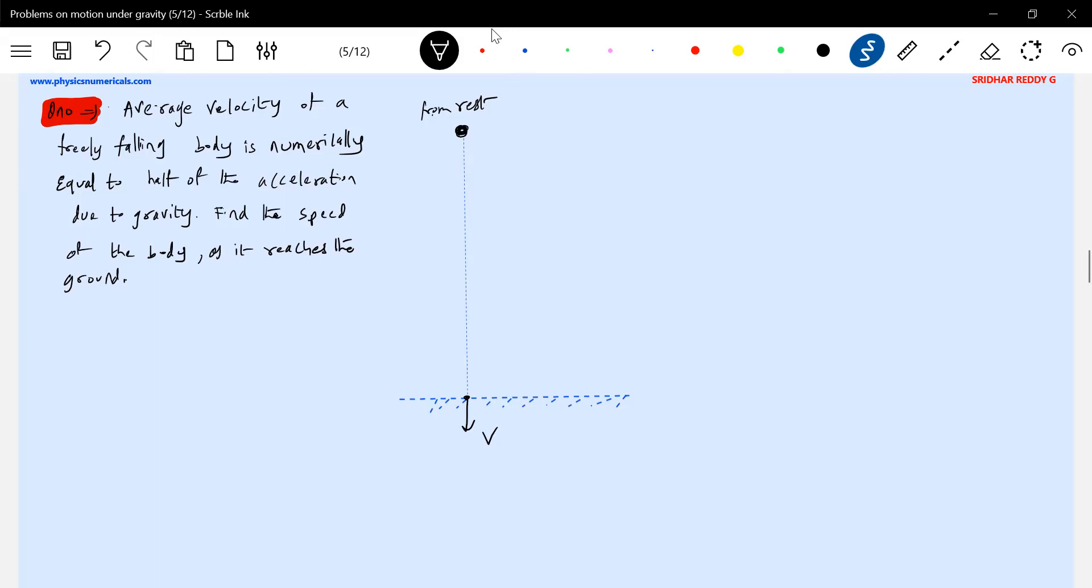This is what we have to find out - the average velocity. Let's do one thing: the velocity at any point when it strikes the ground with a speed vg. So the velocity v at any time...